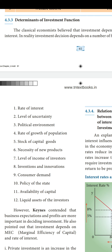Other determinants include: stock of capital goods, necessity of new products, level of income of investors, and inventions and innovations. Invention is when at that moment you are finding or creating some new product. Innovation is the changes made to that product — for example, when television was first discovered, that was invention; but as its model changed over time, that is called innovation. Consumer demand also affects investment.